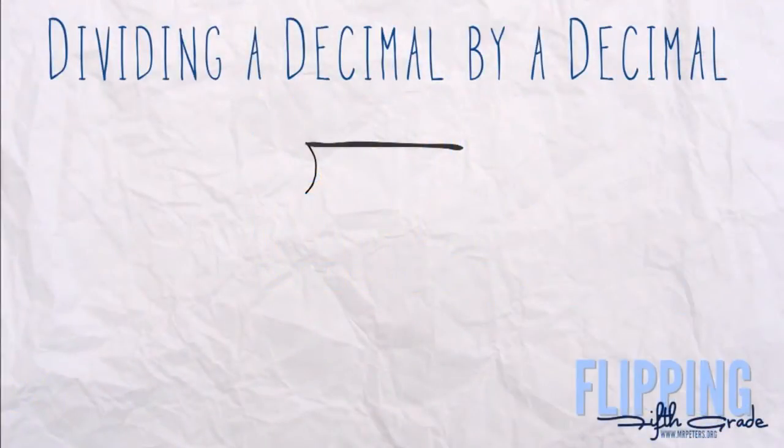All right, now we're going to talk about dividing a decimal by a decimal. This is kind of a combination of the last two topics. So let's look at this first problem: we have 3.6 divided by 0.7.